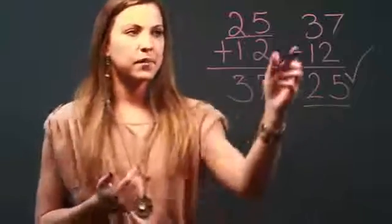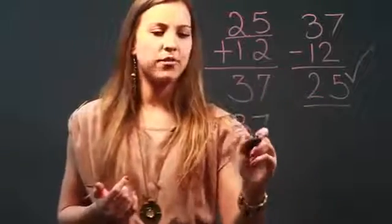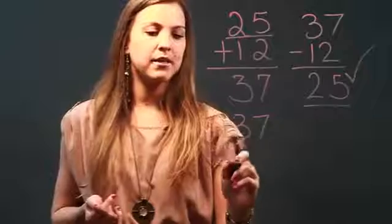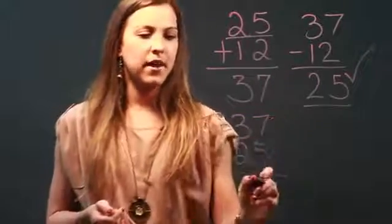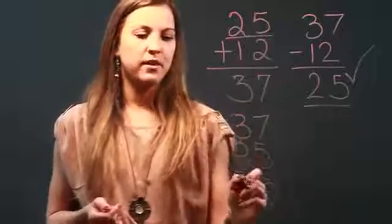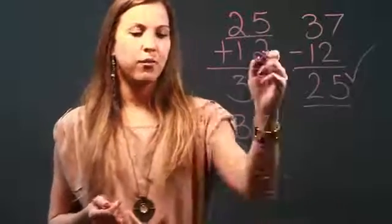And I can also check it by subtracting the other addend. So if I do 37 minus 25, let's see what I get. 7 minus 5 is 2, and 3 minus 2 is 1, and 12 was my other addend.